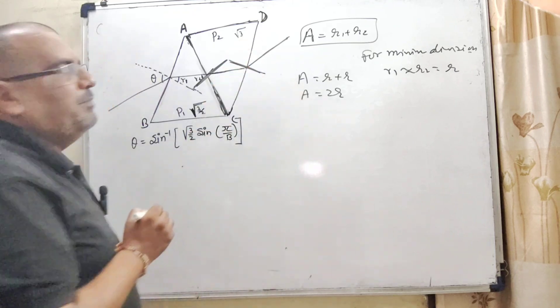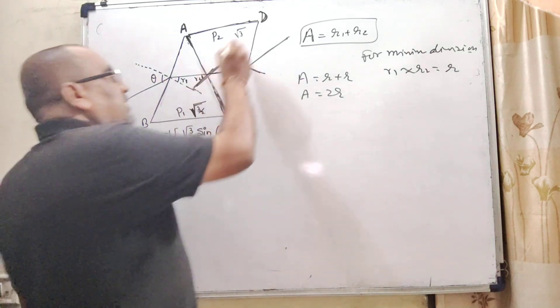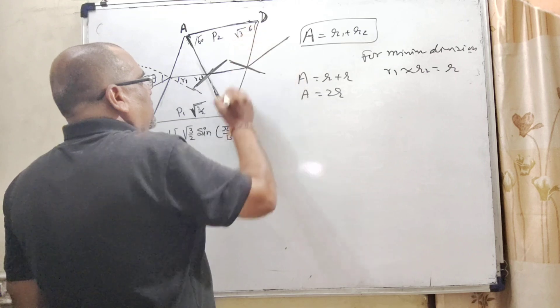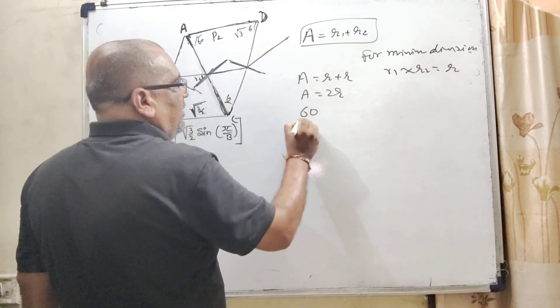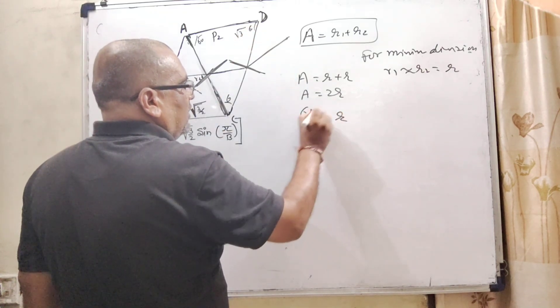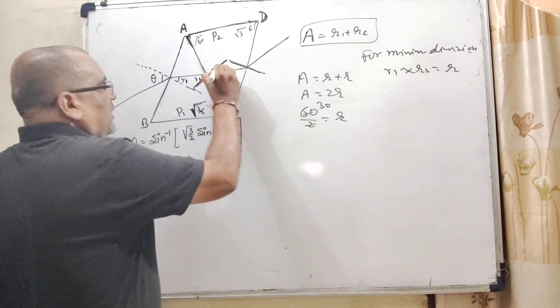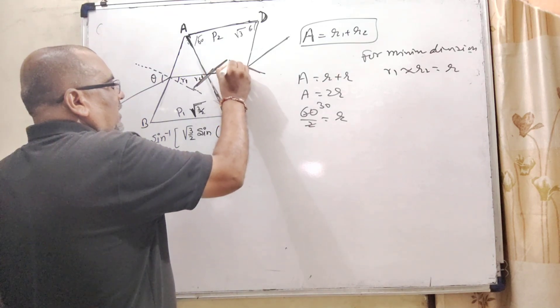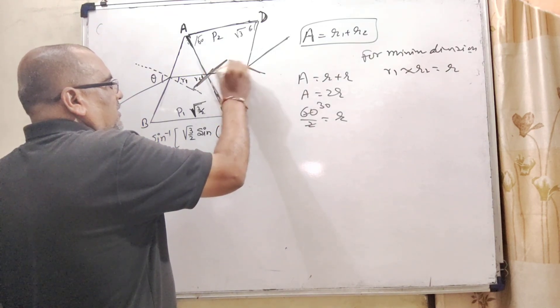This is the common condition for both the prisms. But in this case, for the minimum condition, for minimum deviation, R1 is equal to R2. Let us say R. So here A equal to R plus R, that is A equal to 2R. Here given that the prisms are equilateral, it means 60 degrees, each angle is 60 degrees. So here 60 by 2, that is R, so it is 30. So this angle is 30, this angle is 30.